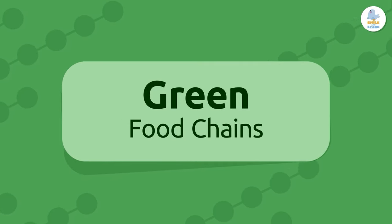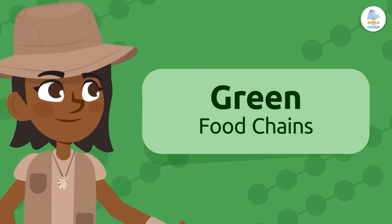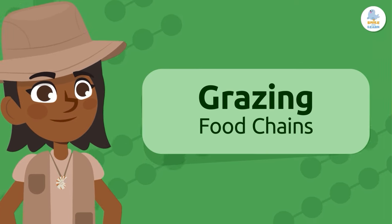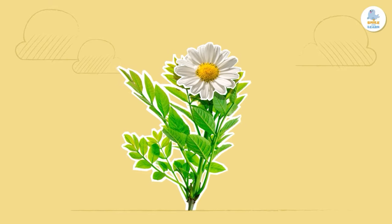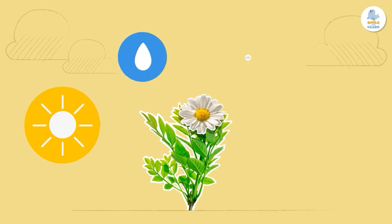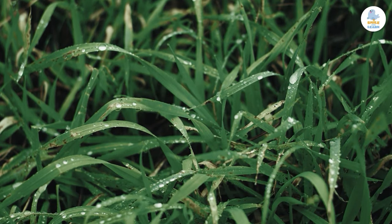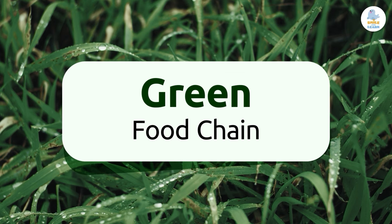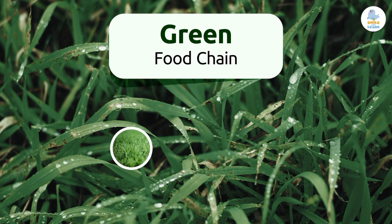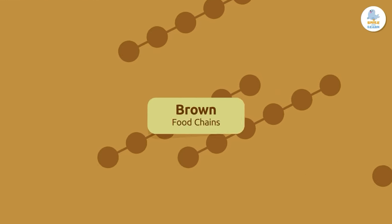Green food chains. We have already seen many green food chains, also called predator food chains or grazing food chains. The first level of these food chains is a producer, which is alive and makes its own food through photosynthesis. That's where the name 'green food chain' comes from, because these producers are alive and green, like grass or any other living plant.